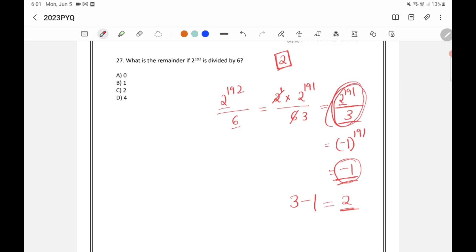But we need, what is the remainder when 2 raised to 192 is divided by 6? And we have cancelled 2 initially. So we need to multiply that 2 now. So we got 2 here. So we need to multiply this 2 with the 2 that we have cancelled initially. So our answer is 2 into 2 is equal to 4. So when 2 raised to 192 is divided by 6, the remainder is 4.